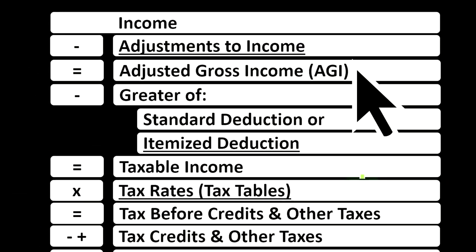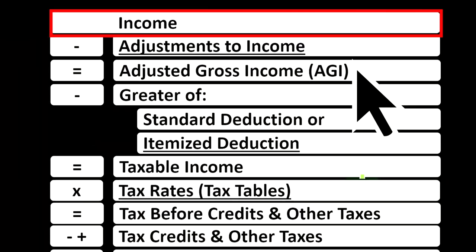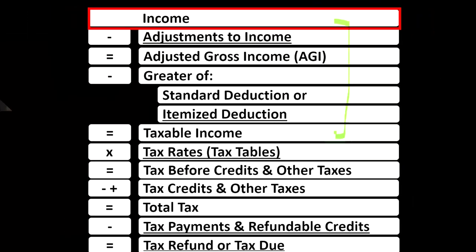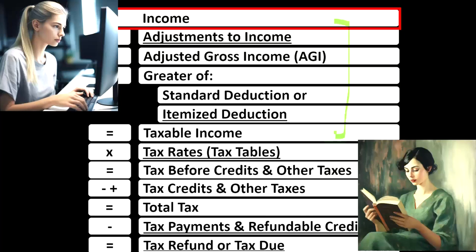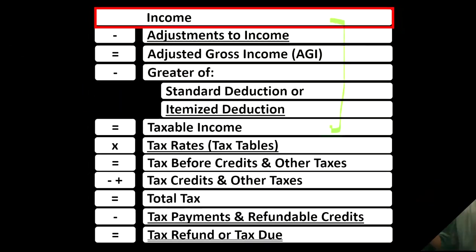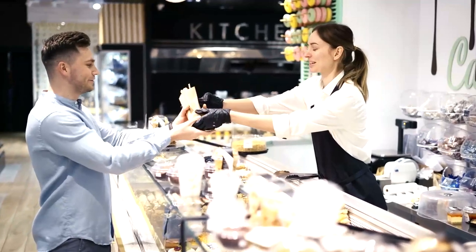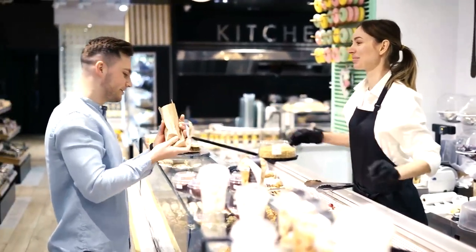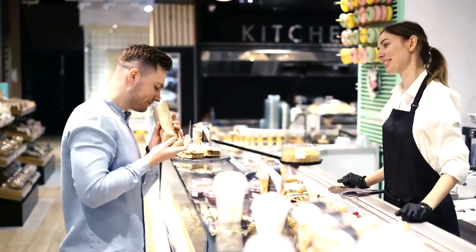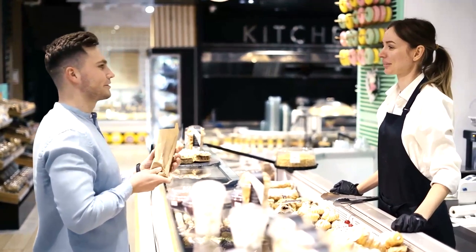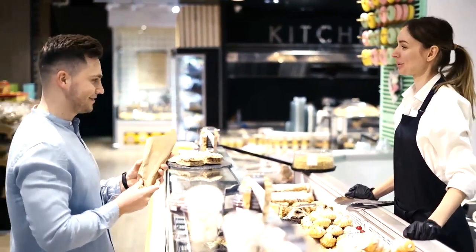Looking at the income tax formula, we're focused on line one — income. The first half of the income tax formula is, in essence, an income statement, but just an outline, with other forms and schedules flowing into these line items, one of those being the Schedule C. The Schedule C takes business income minus business expenses to give us the business net income, which flows from the Schedule C to line one income of the income tax formula.